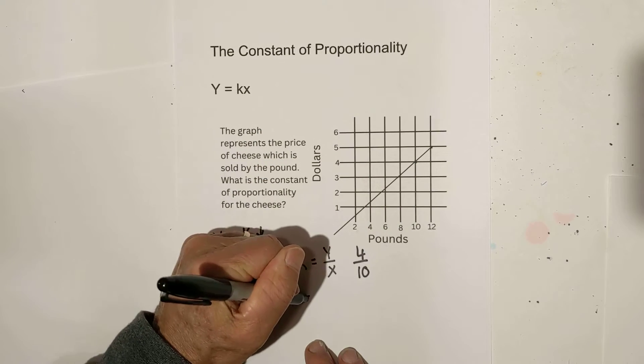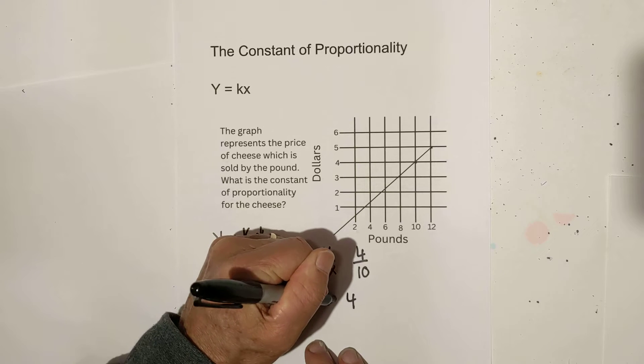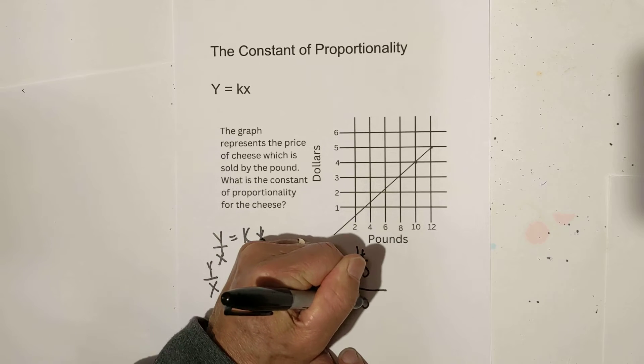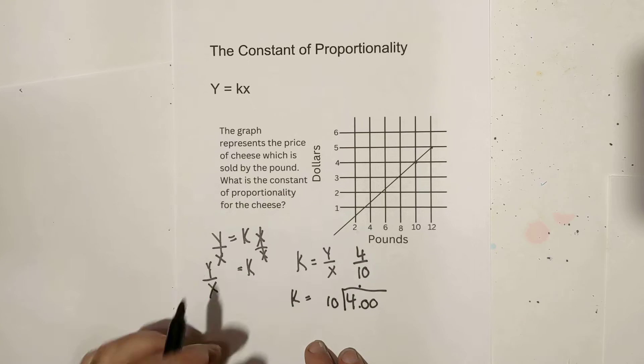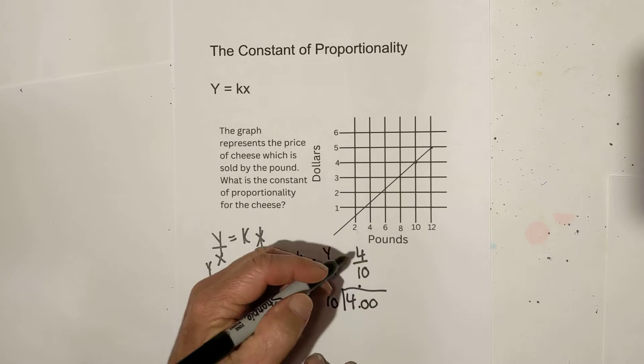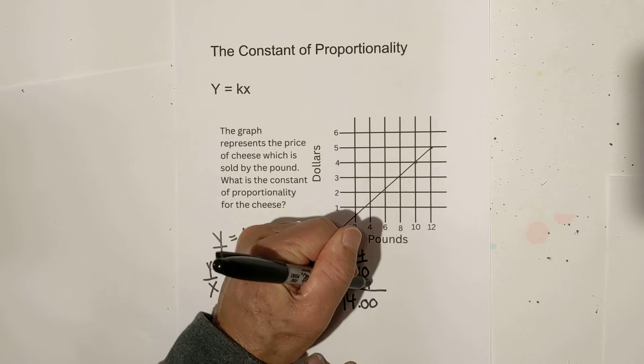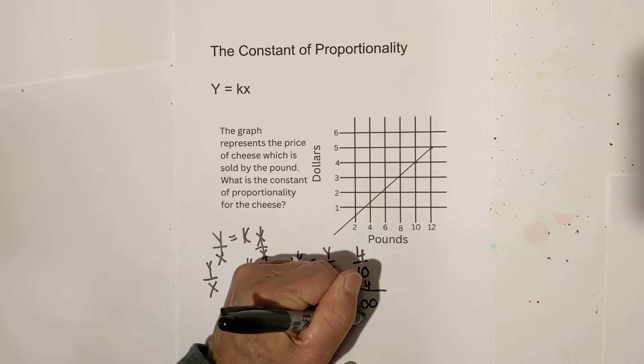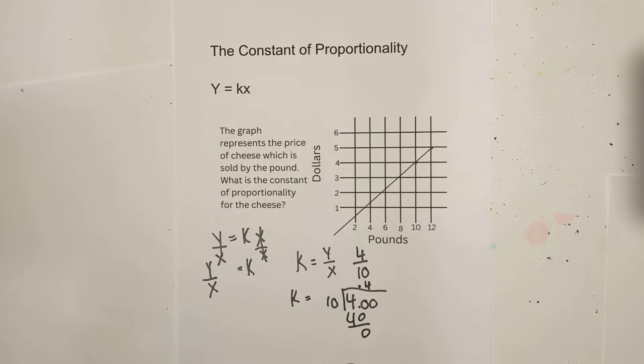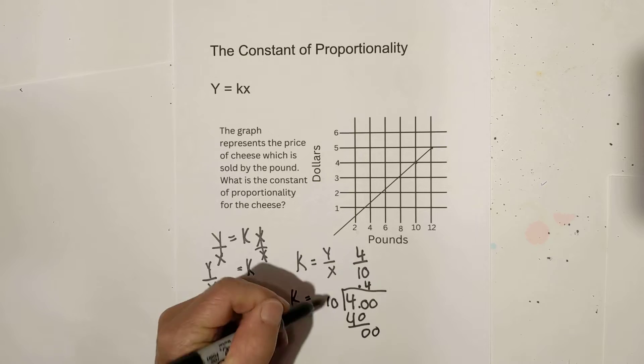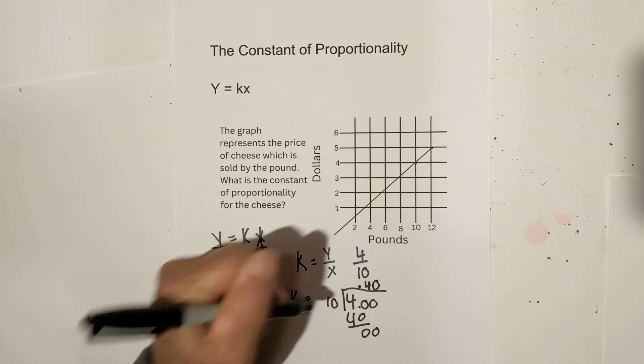For k, I'm just going to divide 4 divided by 10. Put some zeros, bring up the decimal. 10 does not go into 4, but it goes into 40, 4 times. 4 times 10 is 40. 0 remaining, bring down the 0. 10 goes into 0, 0 times.